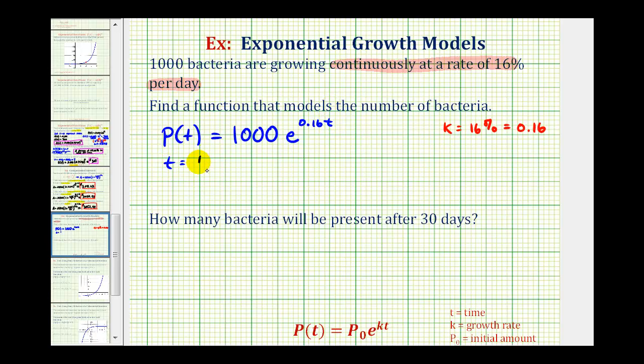Where t equals the time in days, because we're told the continuous growth rate per day, and p of t equals the number of bacteria after t days.